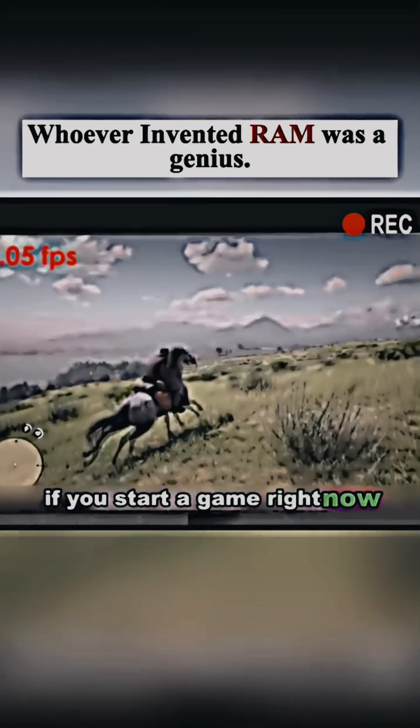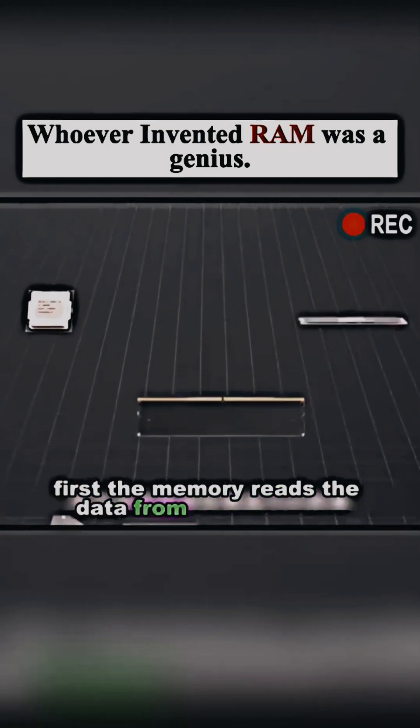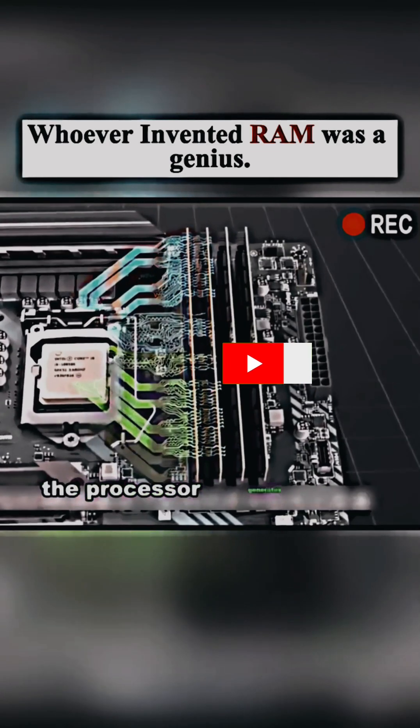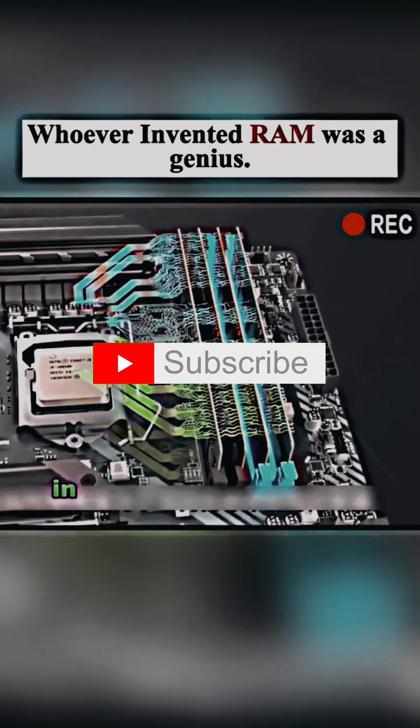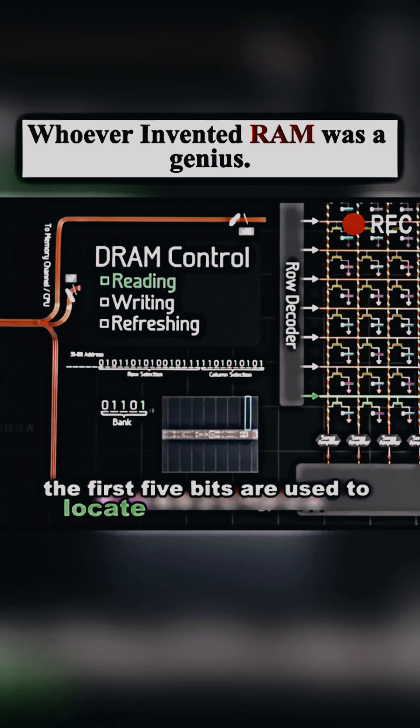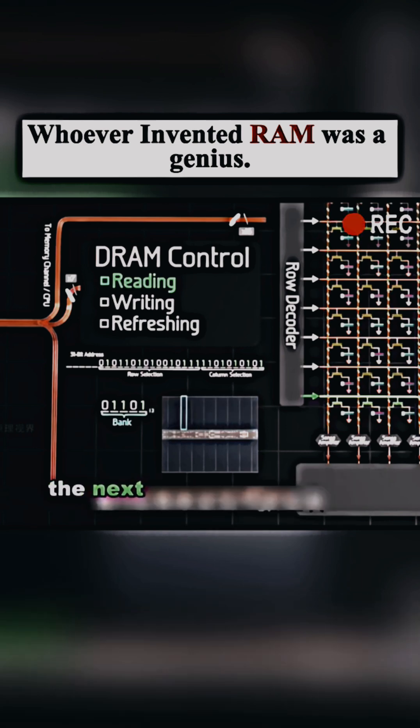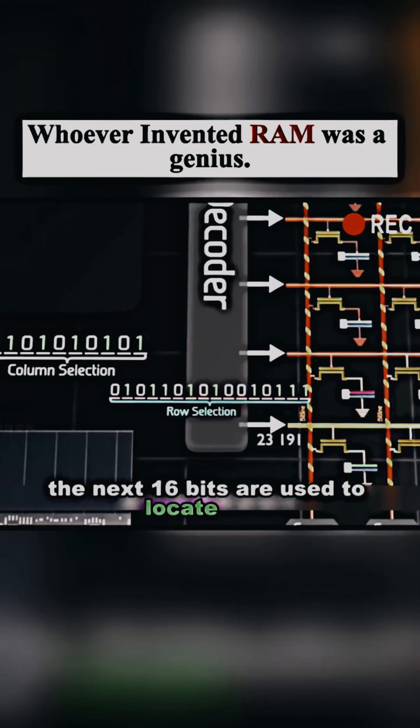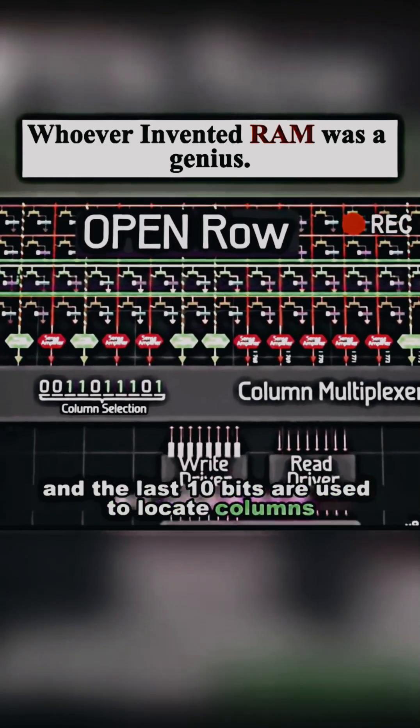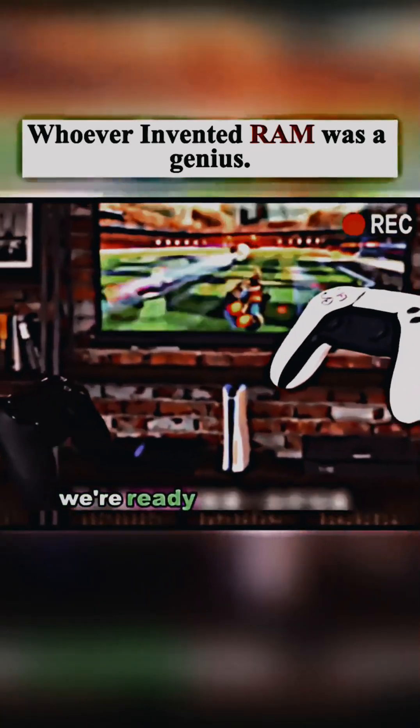If you start a game right now, first the memory reads the data from the hard disk, and then the processor does the math. The processor generates a 31-bit memory address in order to access specific data in memory. The first 5 bits are used to locate blocks of memory, the next 16 bits are used to locate rows, and the last 10 bits are used to locate columns. And finally, we're ready to play games.